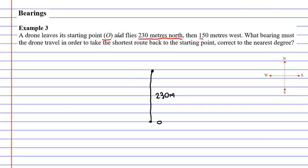Next we're going 150 meters west. Once again we don't need our compass. West basically means just going to the left. 150 meters.